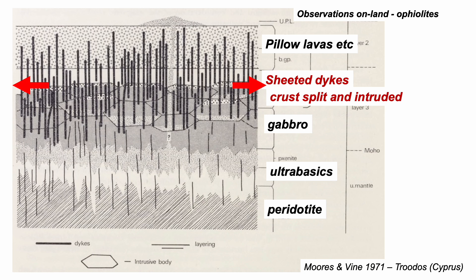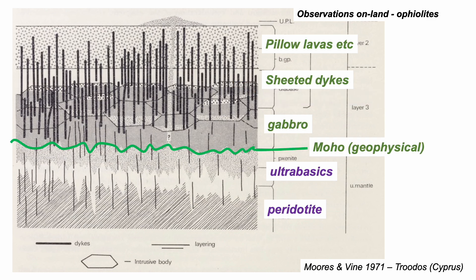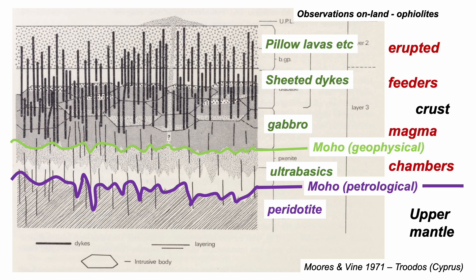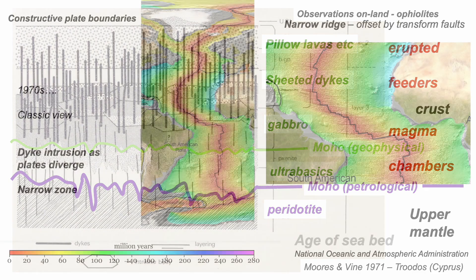Fractionation in the magma chamber leaves denser crystals — the ultra-basics — at the base. Interestingly, for seismic waves, the ultra-basics look like peridotites, so the base of the crust determined geophysically would be here, but in terms of minerals and origin, the true Moho, the crustal base, is here. Nevertheless, these are the key components of the Troodos ophiolite, and it fits the available information on constructive plate boundaries.